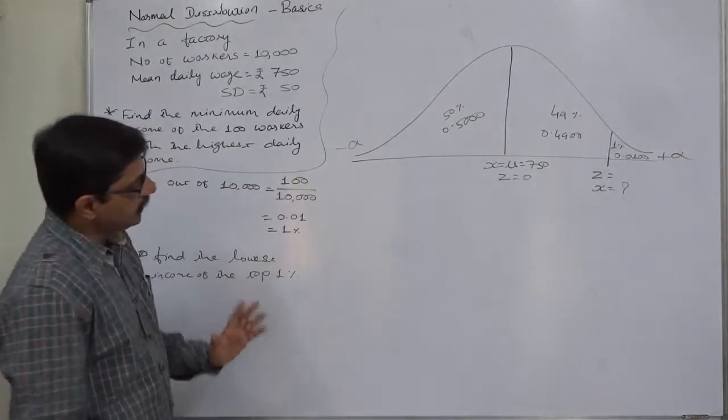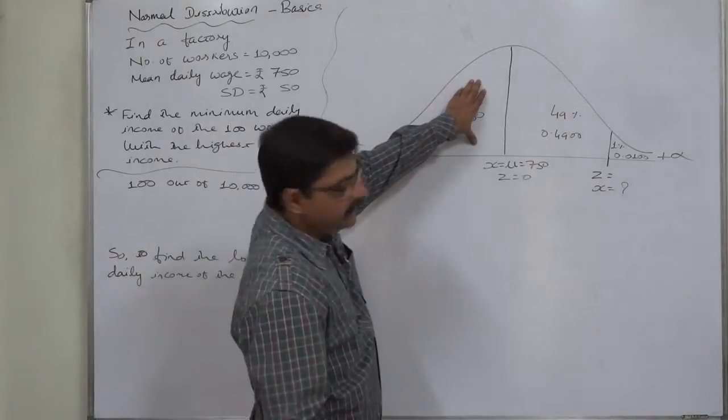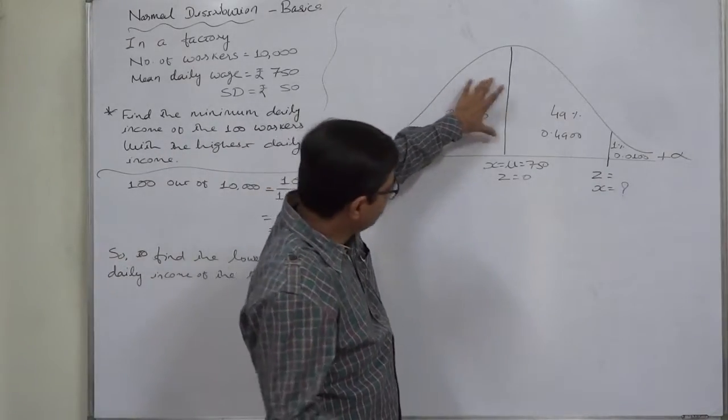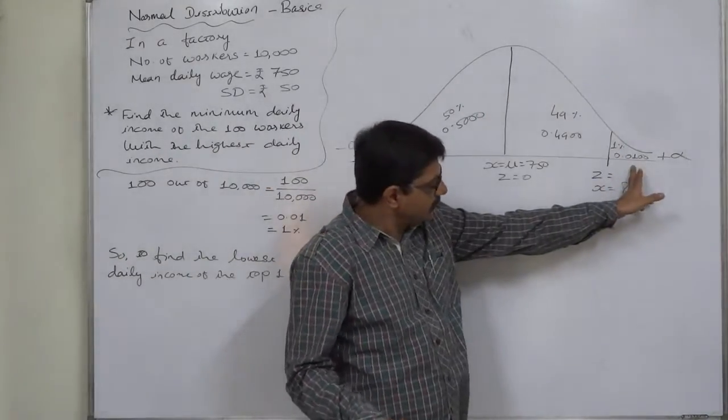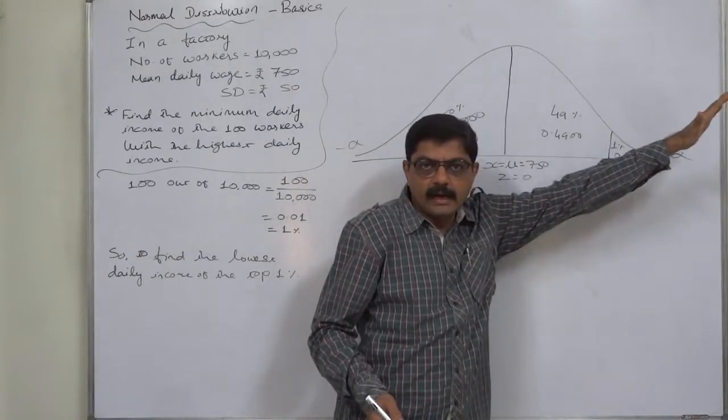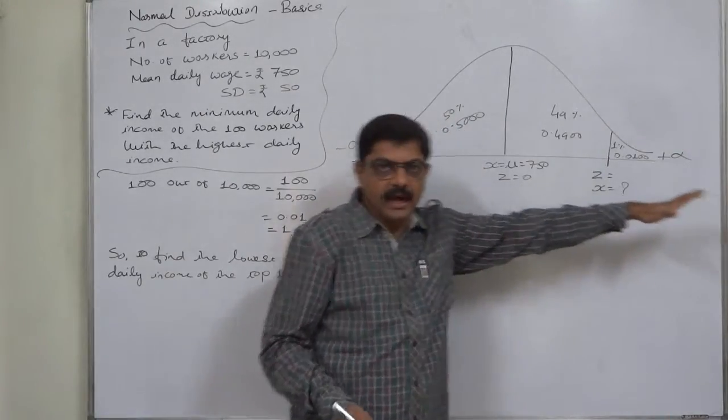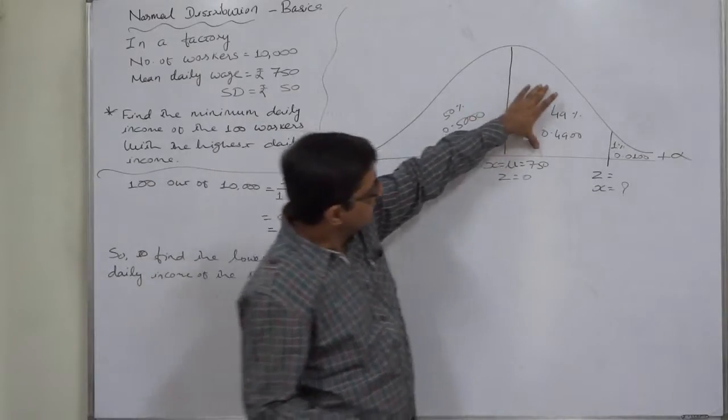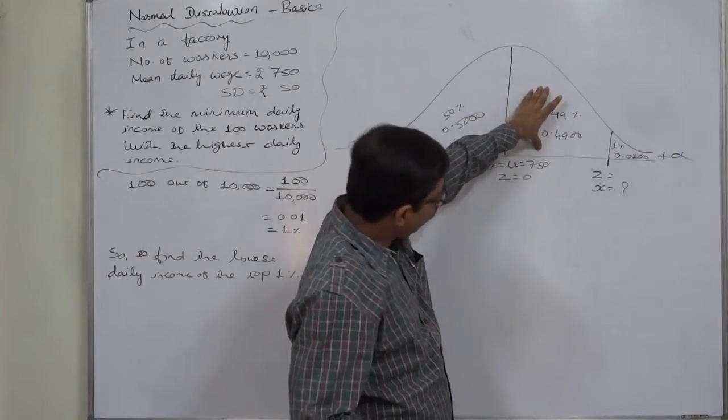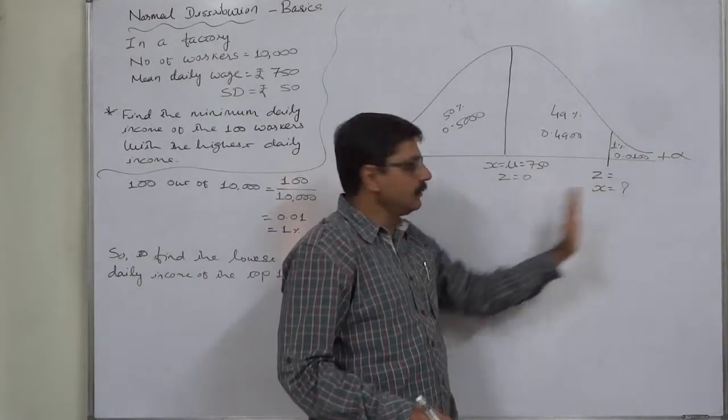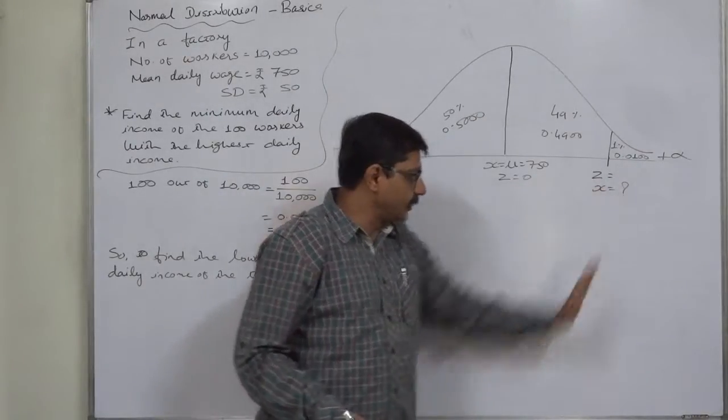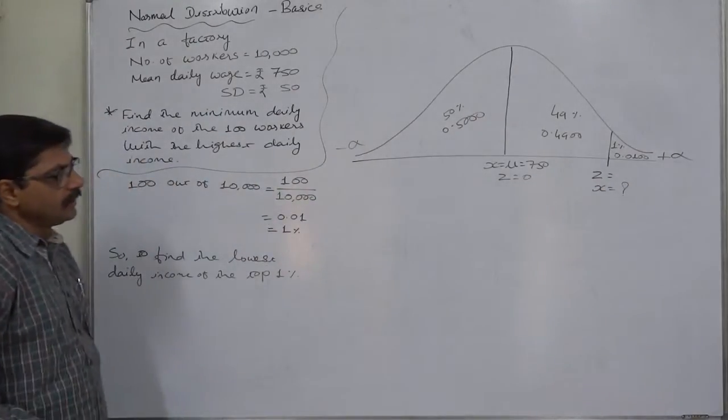We can divide the entire normal curve into three parts: less than mean (0.5 or 50%), 1% workers earning at the highest rate, and 49% earning between the mean and the lowest of the higher income group.